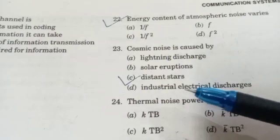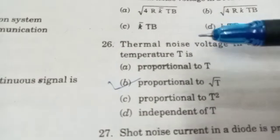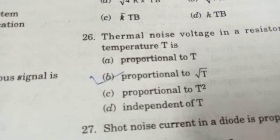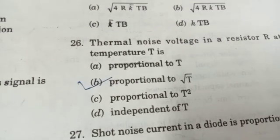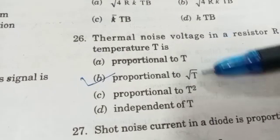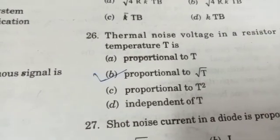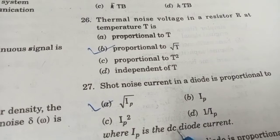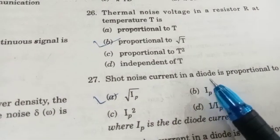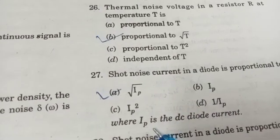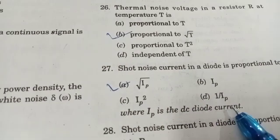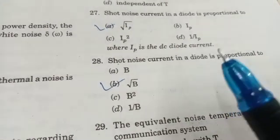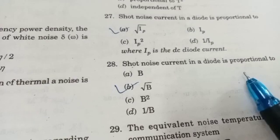Next question: thermal noise voltage in a transistor at temperature T is proportional to the square root of T. Thermal noise is proportional to √T. Shot noise current in a diode is proportional to √(I_p) and also proportional to √B.